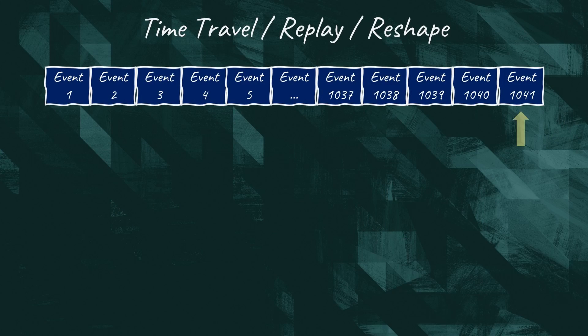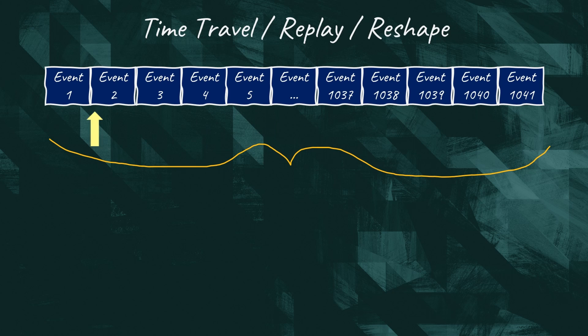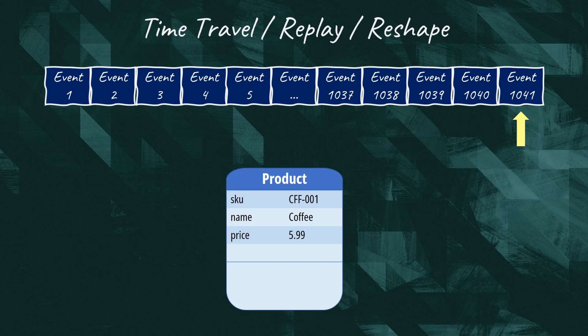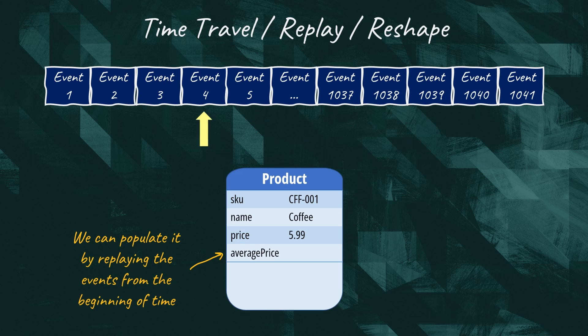Another great advantage is the ability to time travel and replay events. Since the domain model is hydrated by processing the events, we can easily go back in time by pointing to an earlier position in the event log. This can be very useful to debug, perform what-if analysis, and refactor our domain model. If we want to change the structure of our tables or documents in the database, all we need to do is deploy a new version of our application, replay all events, and we're done — no data migration is necessary. The same approach can be used for disaster recovery. As long as we keep our event log replicated or backed up, we will always be able to reconstruct the current state.